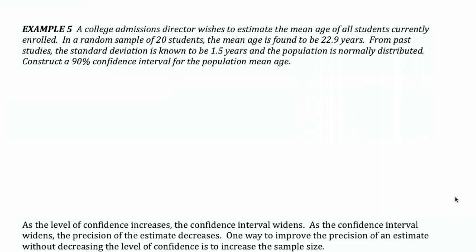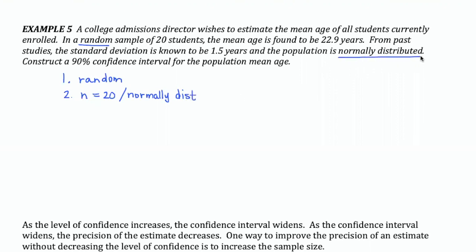Here's another example. A college admissions director wishes to estimate the mean age of all students currently enrolled. In a random sample of 20 students, the mean age is found to be 22.9 years. From past studies, the standard deviation is known to be 1.5 years and the population is normally distributed. We want to construct a 90% confidence interval for the population mean age. We need to check that our sample is random — it is — and check our sample size. The sample size is 20, which is less than 30, but the population is normally distributed, so both conditions are still met.